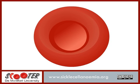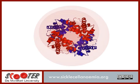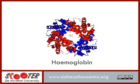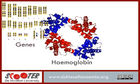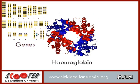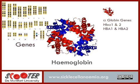The globin molecule that forms part of haemoglobin is encoded by a series of genes. The most common form of adult haemoglobin comprises two variants of the globin molecule: alpha and beta. The alpha globin genes, also known as haemoglobin alpha 1 and 2, or HbA1 and HbA2, are located on chromosome 16.